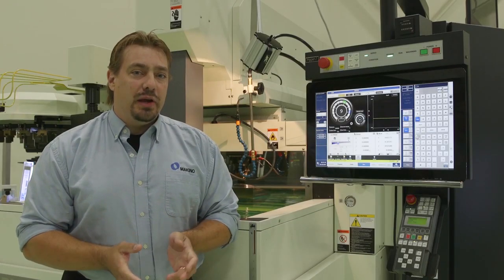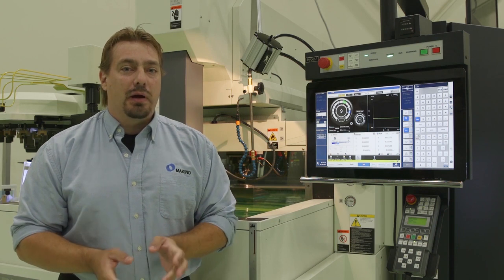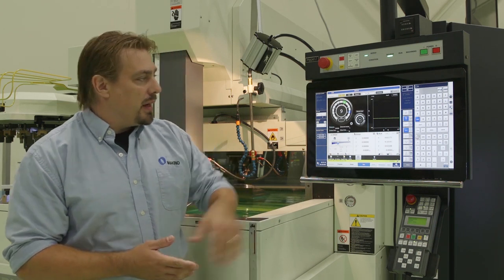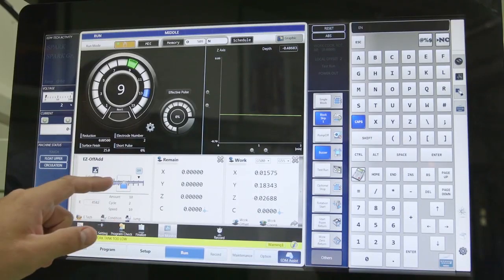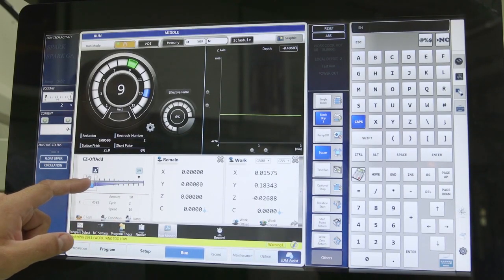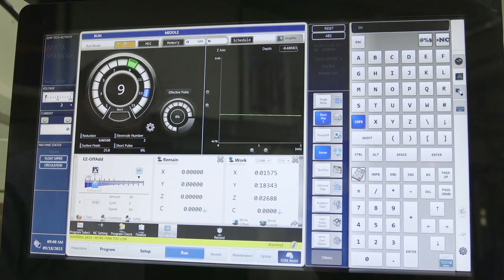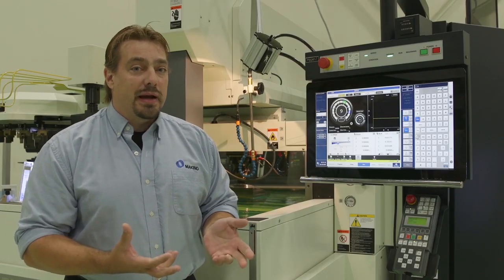So what we're going to do, we're going to highlight some of the key features on the Sinker Hyper-I control. Our screen itself is a 24-inch high-definition touchscreen and we've made the interface kind of like a giant iPad or smartphone technology.